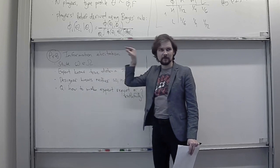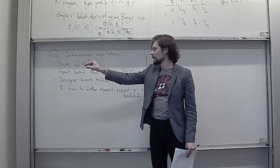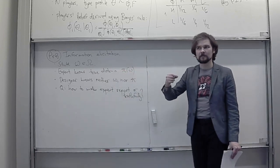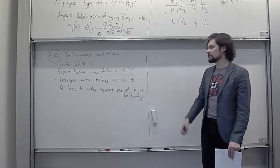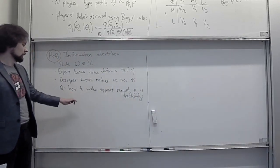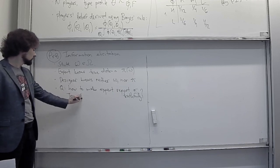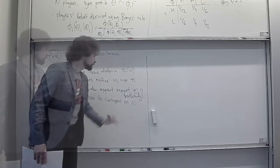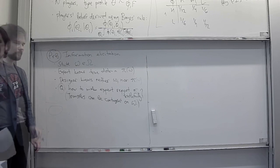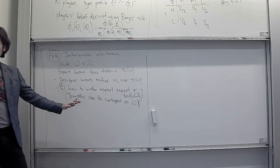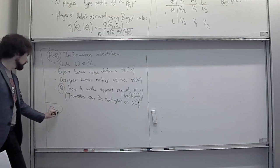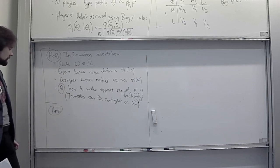We want to make the expert report pi truthfully. Transfers can be contingent on the realization of the state, so the transfer will depend on the expert's report and the realized state. The question is how the designer can design transfers to incentivize the expert to reveal pi truthfully. I will give you the solution without deriving it, and we will check why it is indeed the solution.